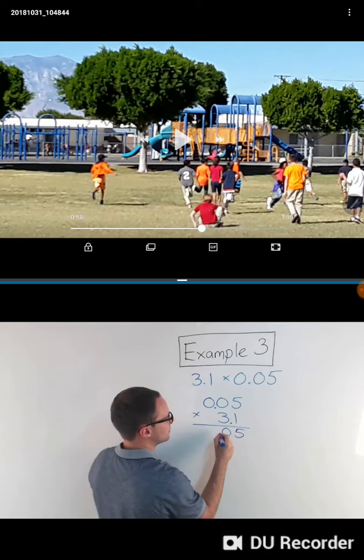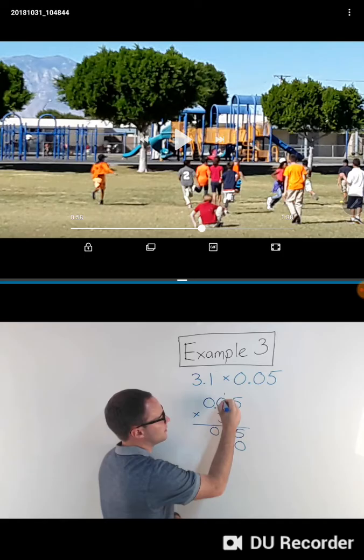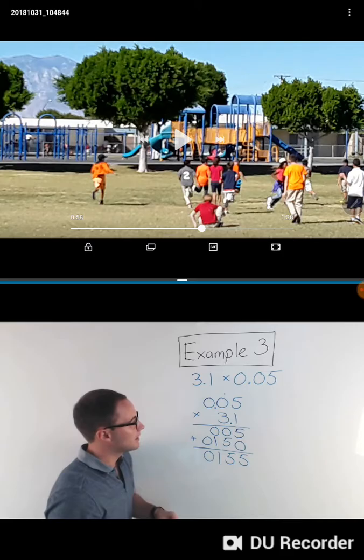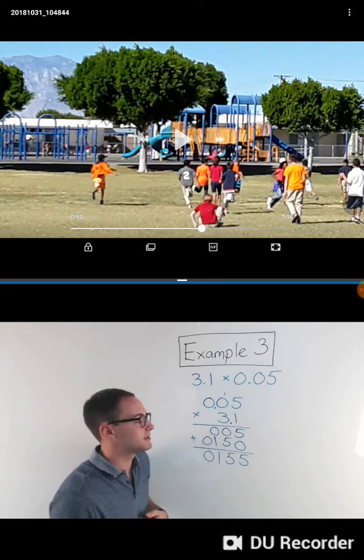1 times 5 is 5, that's going to be 0, 0. Add a 0. 3 times 5 is 15, carry the 1. That's 0 plus 1 is 1, 0. Add them up. Now I get 5, 5, 1, 0.